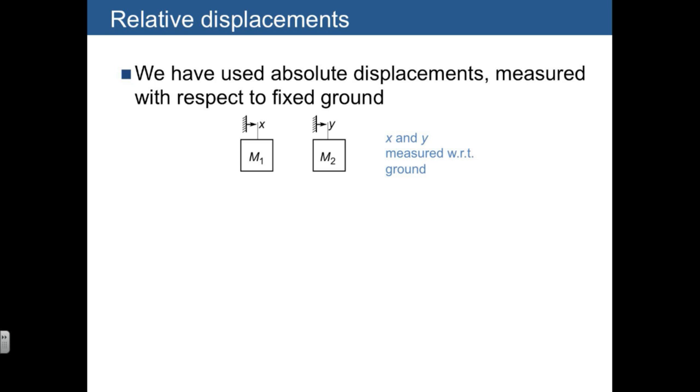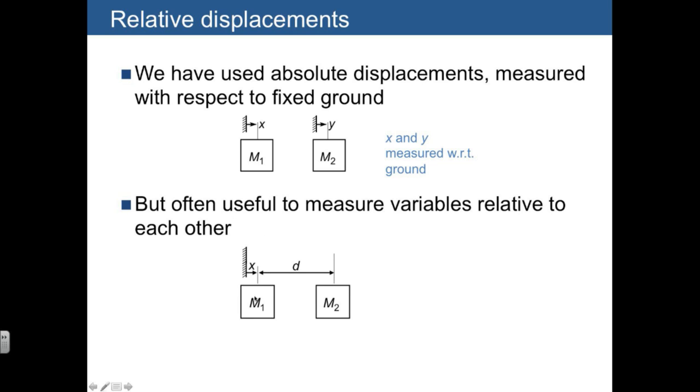But of course, sometimes it's helpful to work with relative measurements, where the compression or stretch of a spring is really a comparison of the two ends of the spring with respect to each other. And here's an example of those same two masses, except the second one is measured with a relative displacement. So we have an absolute displacement x for m1, and then d is the relative displacement between the two masses.